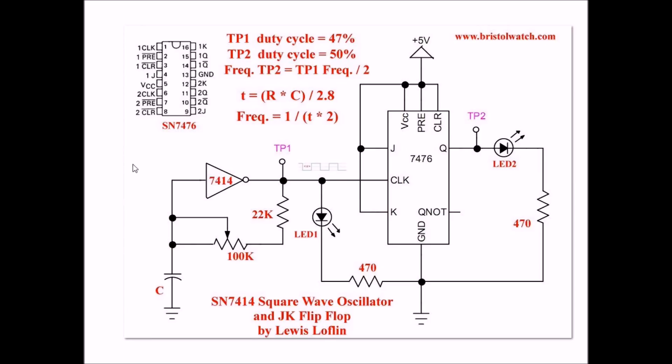Here is the complete circuit using the 7414 as a square wave generator, and the 7476 in its toggle divide by 2 mode. We already discussed the 7414 in a previous video. So test point 1 has the output square wave from the 7414. The output square wave, of course, is dependent on the resistance of this 22K and 100K pot and the value of C.